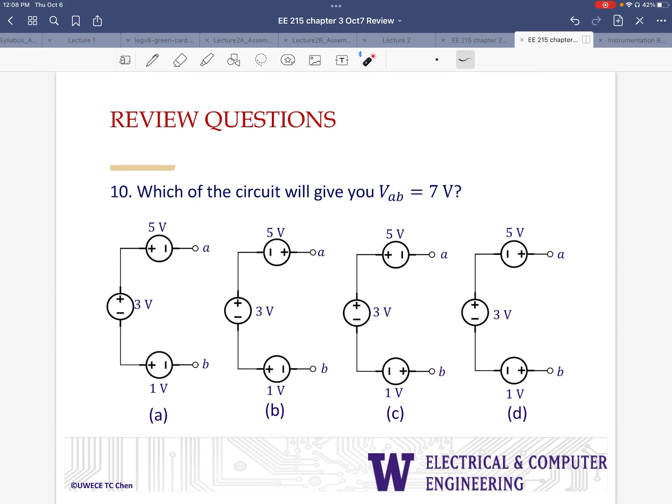We have this last question here. We have four circuits that are shown. They're not complete loops. However, the question is just about voltage between two points. So which of these circuits will give you voltage between points A and B to be 7 volts? What I'm going to do is go from A to B and add up the voltages, pay attention to the polarity, and compute VAB. So for the first one, I've got minus 5 plus 3 plus 1. And that gives me negative 1 volt.